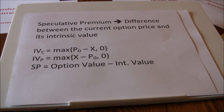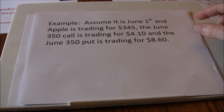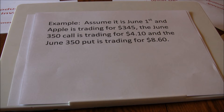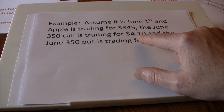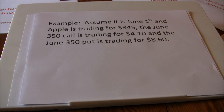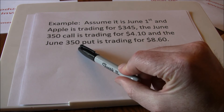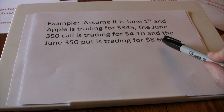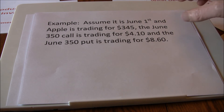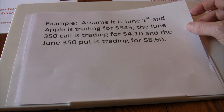The best way to show this is to walk through an example. We're going to go back to an example used in one of our previous videos — call and put options on Apple. We're going to assume it's June 1st and Apple is trading for $345 per share. We're looking at a June 350 call option. The June contract expires on the third Friday of June — all contracts expire on the third Friday of the expiration month — so we've still got about two or three weeks until this option expires. The June 350 call is currently trading for $4.10, and the June 350 put — the right to sell Apple stock for $350 a share — is trading for $8.60. We're going to calculate the intrinsic value and speculative premium for each of these options.